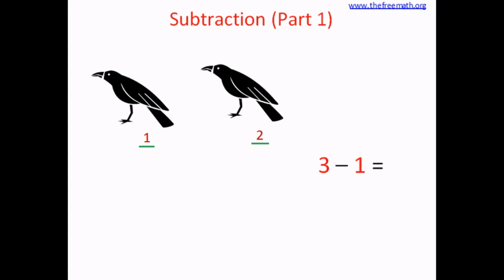Now we have only two crows, so we draw two sleeping lines, which is called equals, and write two. So we have written three minus one equals two. This is called subtraction — three crows were there, one flew away, and two are left. Three minus one equals two.